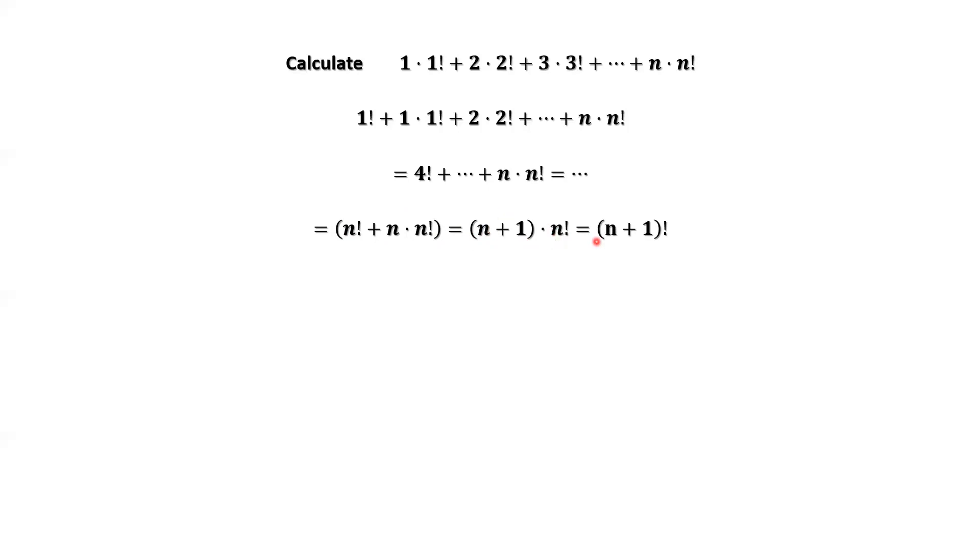Simplify this, we have n plus 1 factorial. The original problem is without the 1. Therefore, the original expression equals this result minus 1.